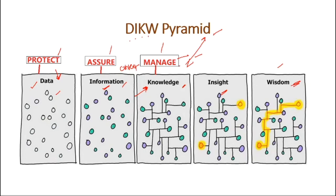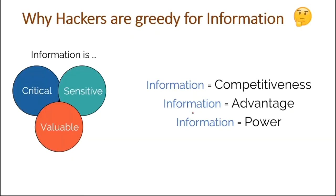Once we apply context to information, it converts into knowledge, and we have to manage that knowledge to keep things secure. Then we connect those dots of knowledge to get insight, and connecting all those insights to form policies gives us wisdom. So the DIKW pyramid and the Protect/Assure/Manage terms are extensively used in machine learning and cybersecurity — it's a process of converting raw data into wisdom while keeping everything secure.